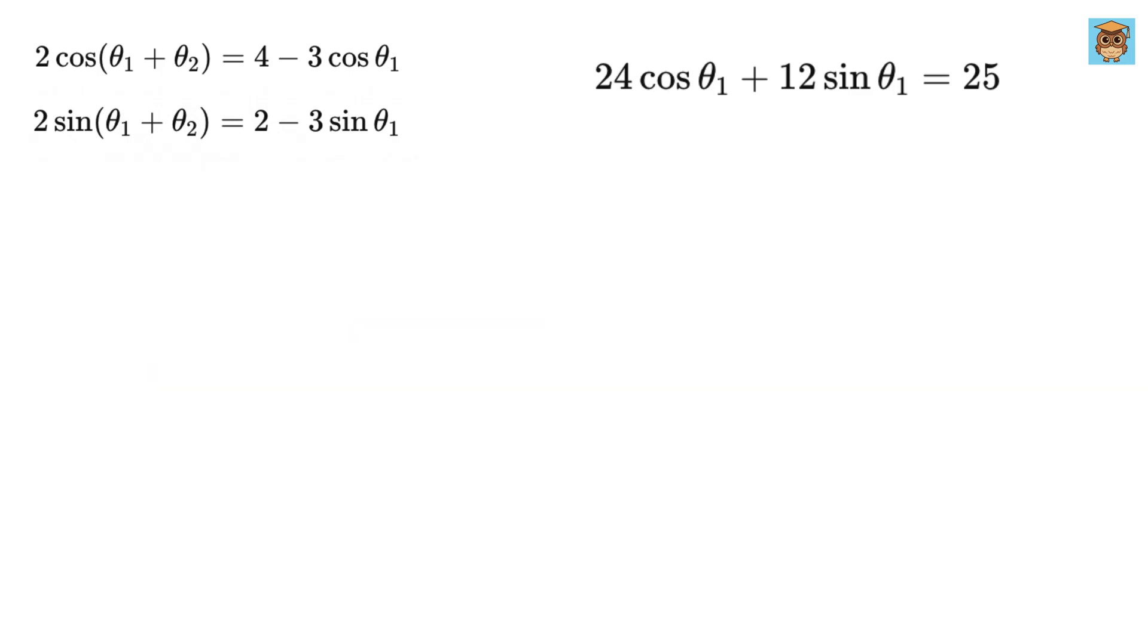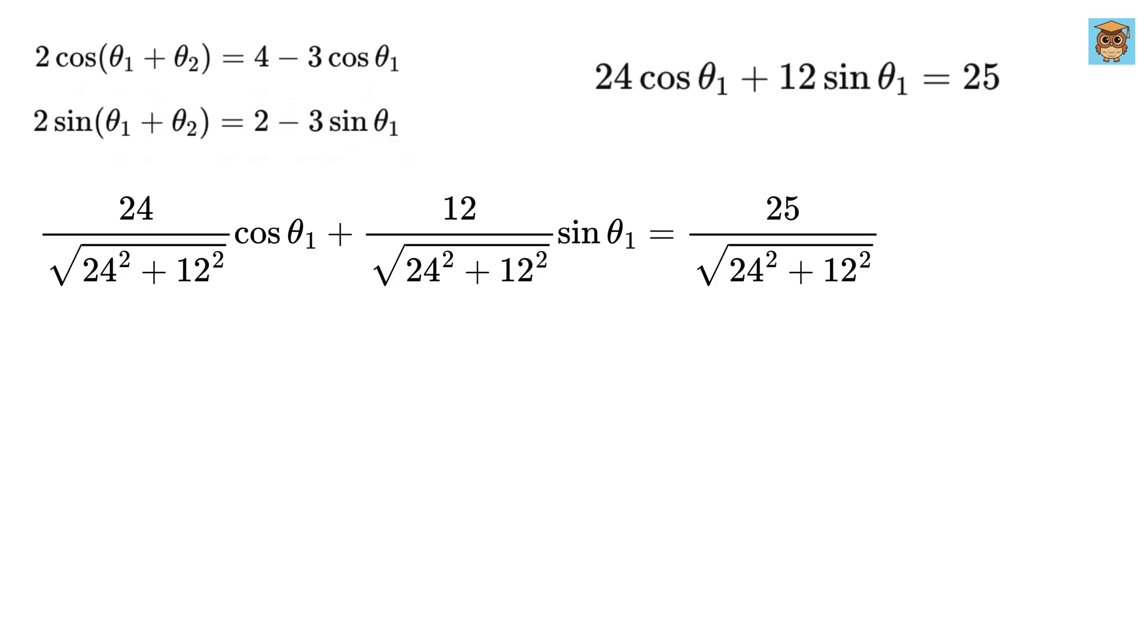To do so, divide all sides of the equation by square root of 24 square plus 12 square. Why? Because if we draw a right triangle with sides 24 and 12, then using Pythagoras theorem, the hypotenuse will be of length square root of 24 square plus 12 square.